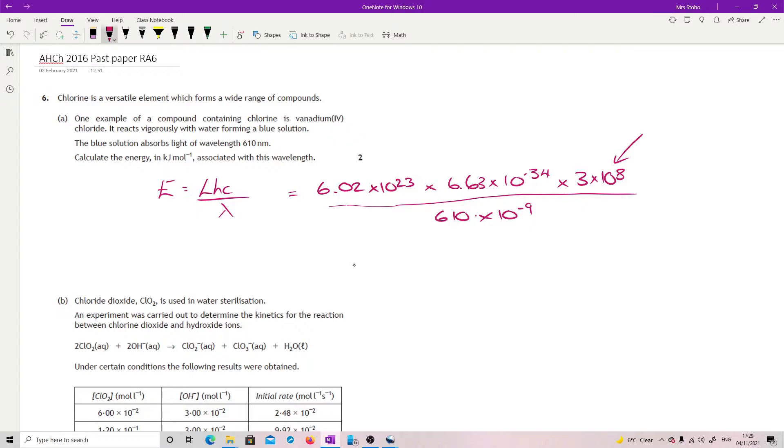Okay, do the calculation. 1.96 times 10 to the 5. But because this is in joules, this is also in joules per mole. And we need it in kilojoules. So we need to convert that to 196 kilojoules per mole. And that's it.